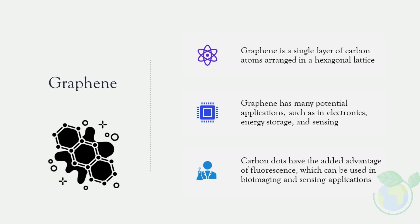Graphene is a single layer of carbon atoms arranged in a hexagonal lattice. It has high electrical and thermal conductivity and high mechanical strength, with many potential applications such as in electronics, energy storage, and sensing. However, it is not fluorescent, unlike carbon dots. Carbon dots have the added advantage of fluorescence, which can be used in bioimaging and sensing applications.